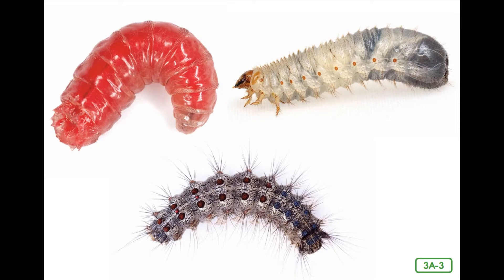Larvae feed and grow as quickly as they can. They also molt, or shed, their hard exoskeletons many times as they grow because the exoskeletons don't grow with them. In this way, insect larvae grow larger each time they molt until they are ready to change into adult insects.